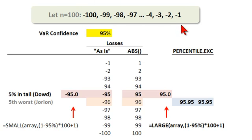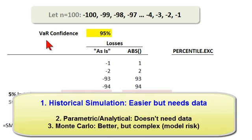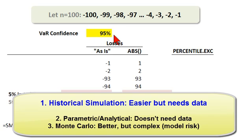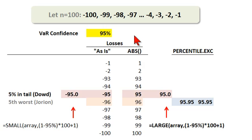Once we have ordered loss observations, you may recall the advantage of historical simulation over the other two approaches to value at risk is its simplicity. That is to say, once we've ordered the loss observations, we really just look down the list. Now let's ask the question: what is the value at risk with 95% confidence? VAR is always one-tailed, so the 95% necessarily corresponds to a 5% — that's 1 minus 95% — significance.